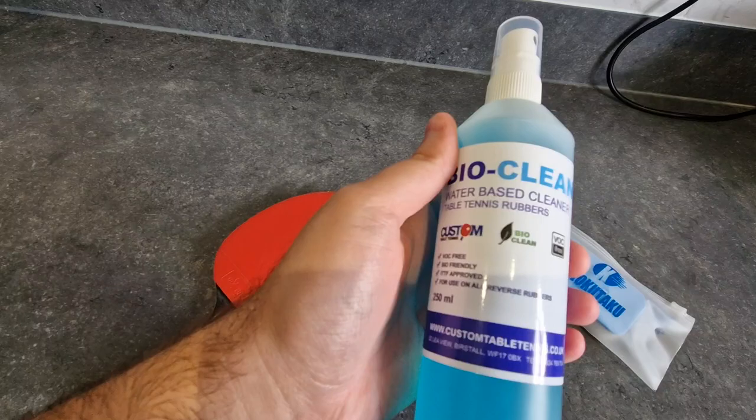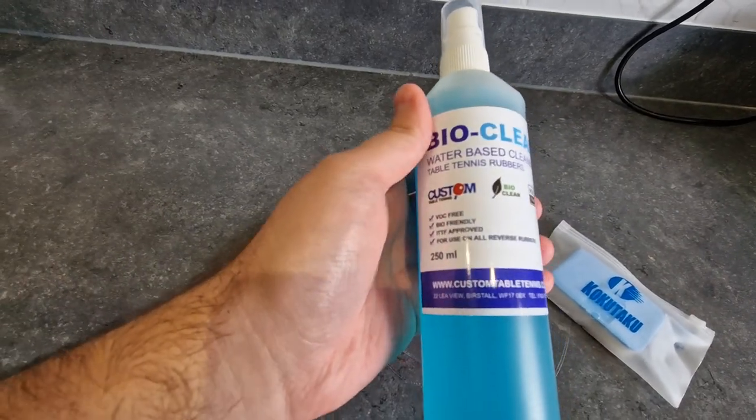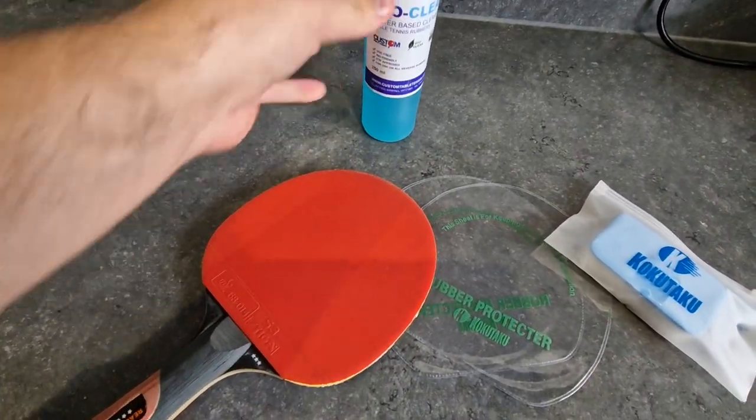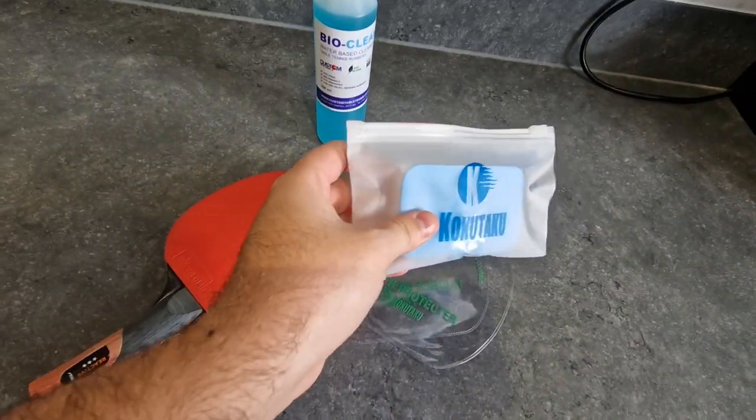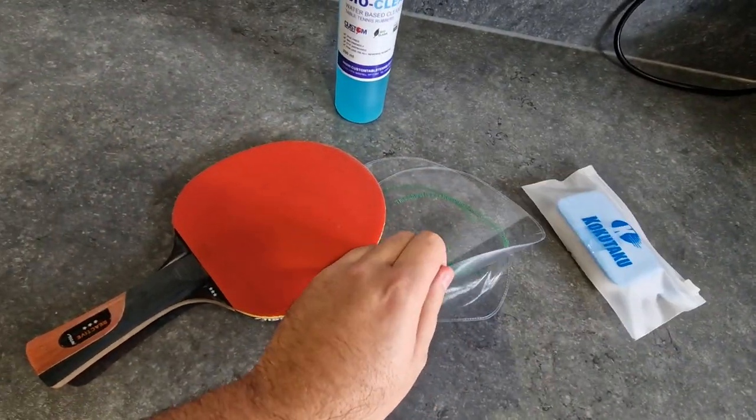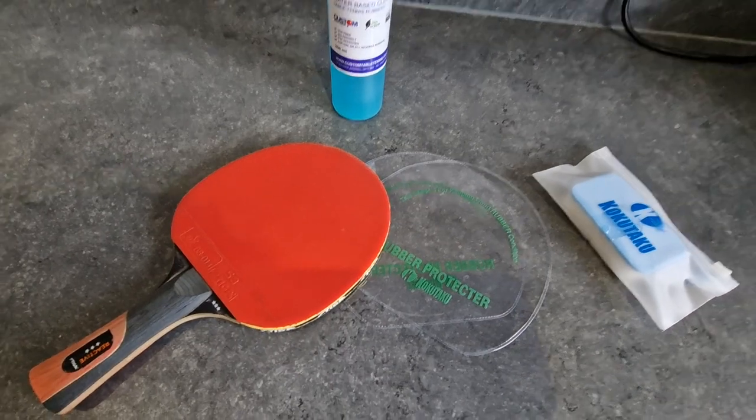It's a water-based cleaner to help maintain and clean your table tennis rubbers. I also just got the sponge and the protectors for the rubber as well.